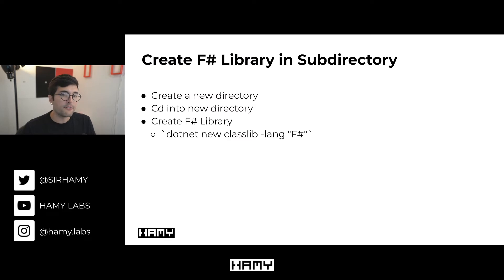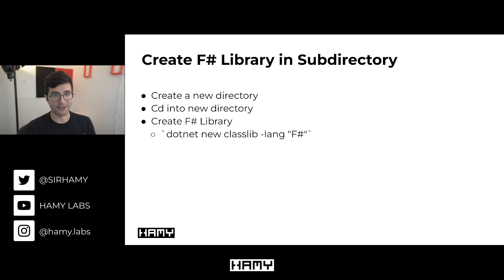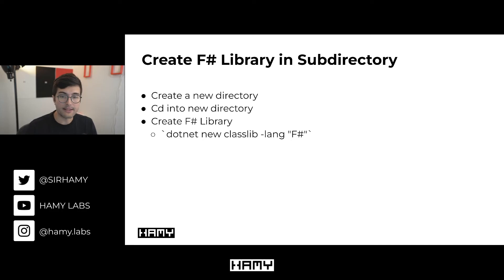Now that we have our working Godot project with C-sharp, we can go ahead and get started on our F-sharp project. The way I recommend doing this is to create a new directory within your Godot project specifically for your F-sharp scripts — this is going to keep it organized and help ensure that all of our dependencies and references are working correctly. Once we have that new subdirectory, we're actually going to create our new class library with F-sharp in there, and this is going to be that F-sharp project that we're going to reference from our C-sharp.